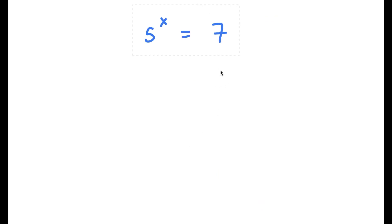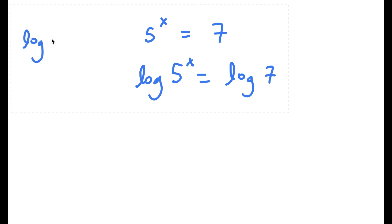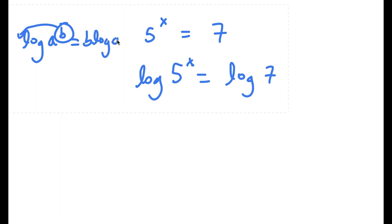In this problem, I have 5 to the power of x is equal to 7. To start off, I'm going to take the log on both sides. So now I have log 5 to the power of x is equal to log 7. If I have something in the form log a to the power of b, I can move the exponent b to the front, so this equals b times log a.